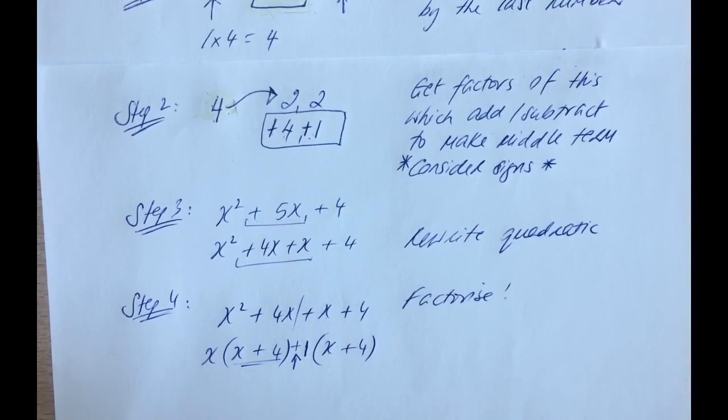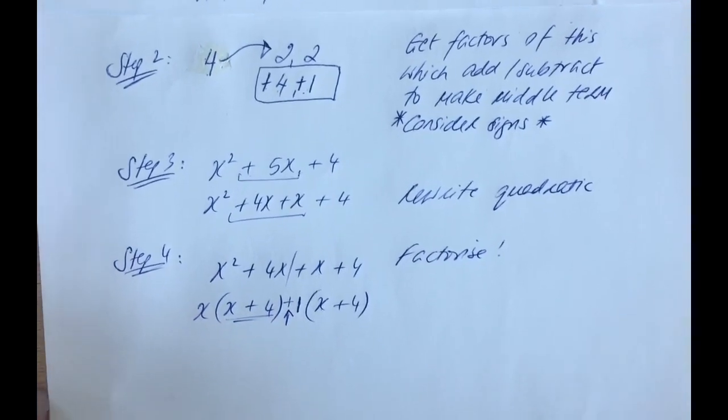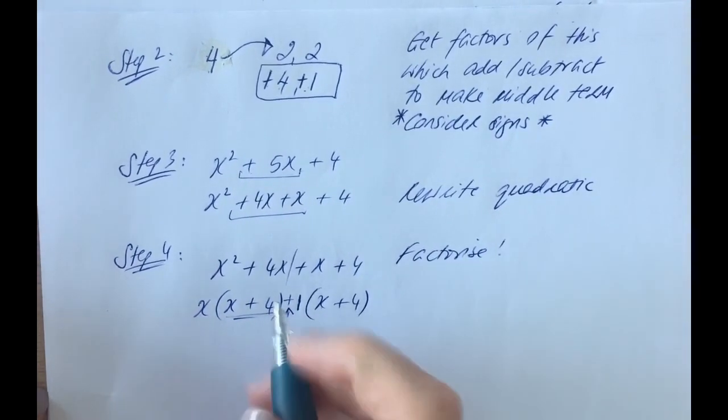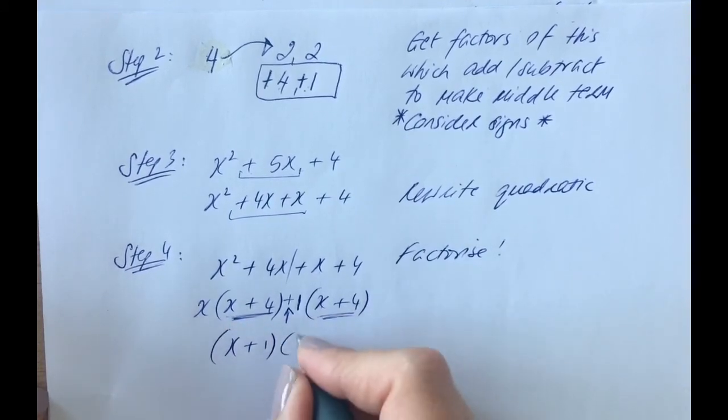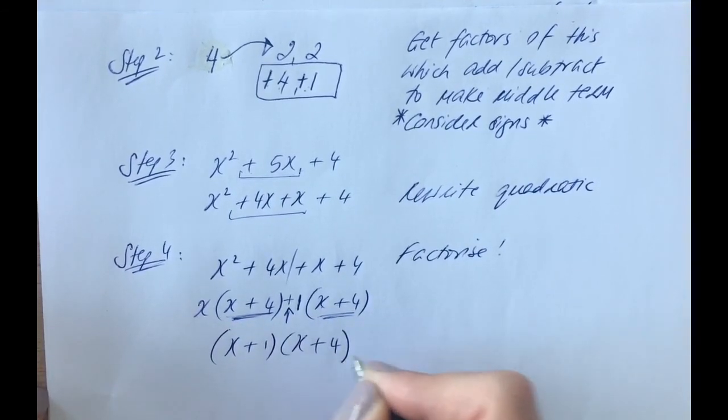So, just like with your factorizing grouped common terms, what has been split up is always the first bracket, so your x plus 1, and the repeated bracket is always the second bracket. And, of course, that is your final answer.